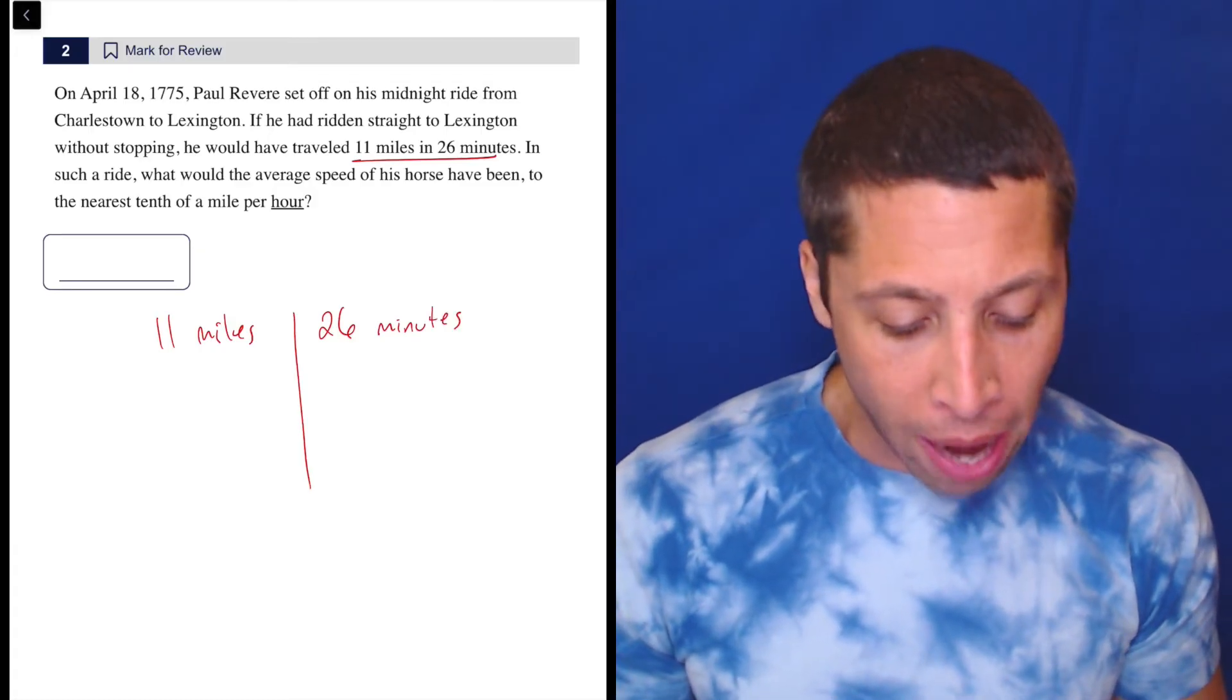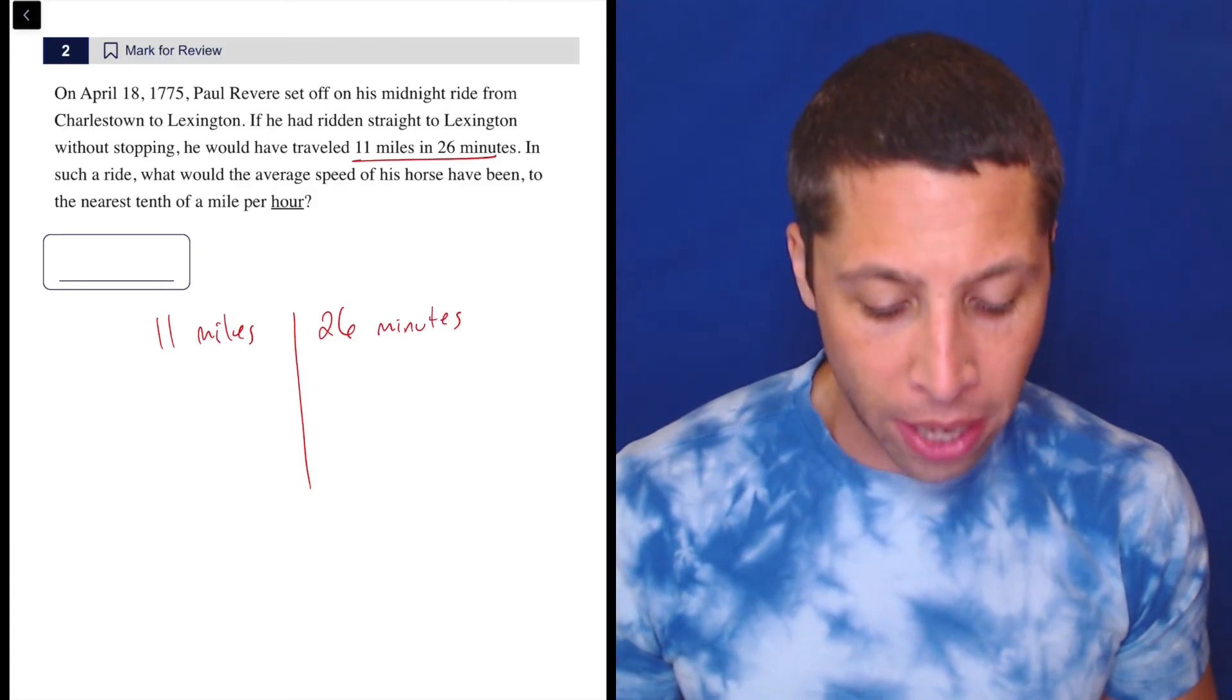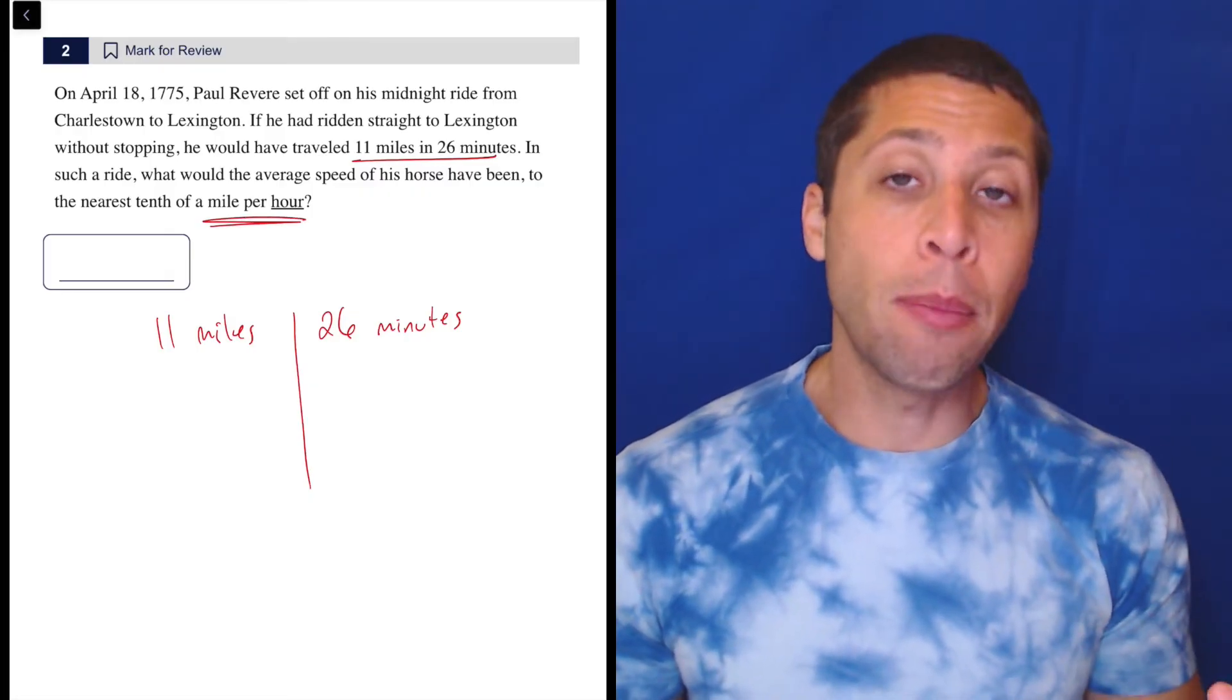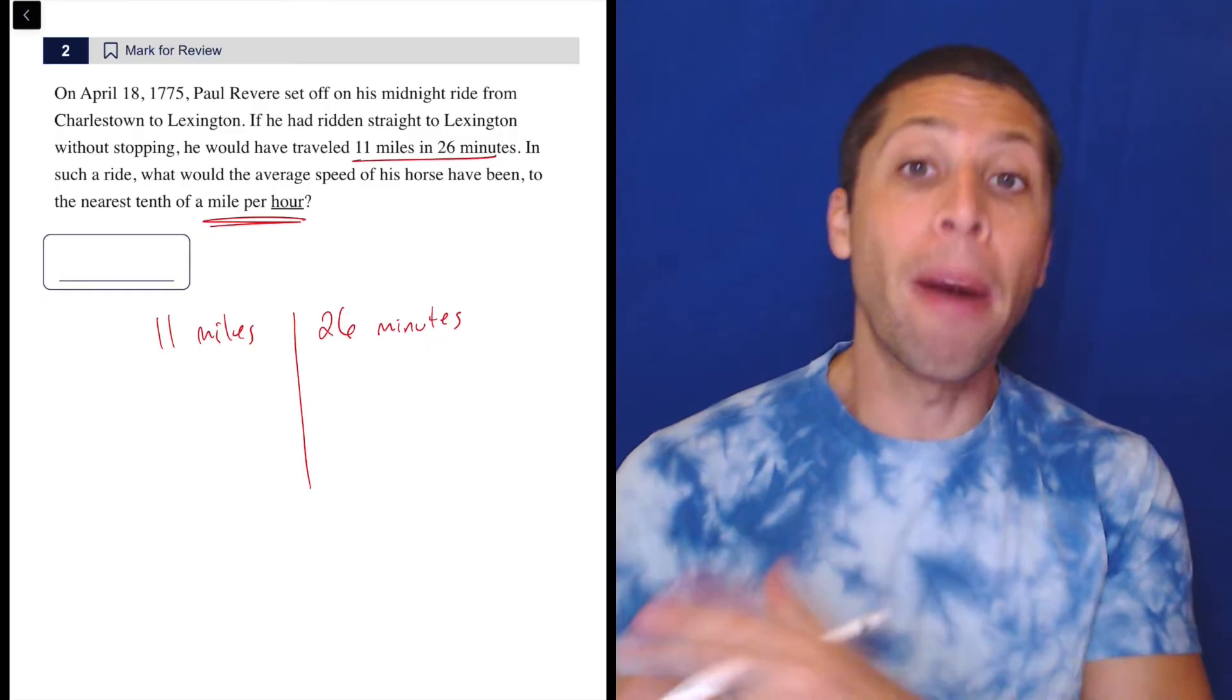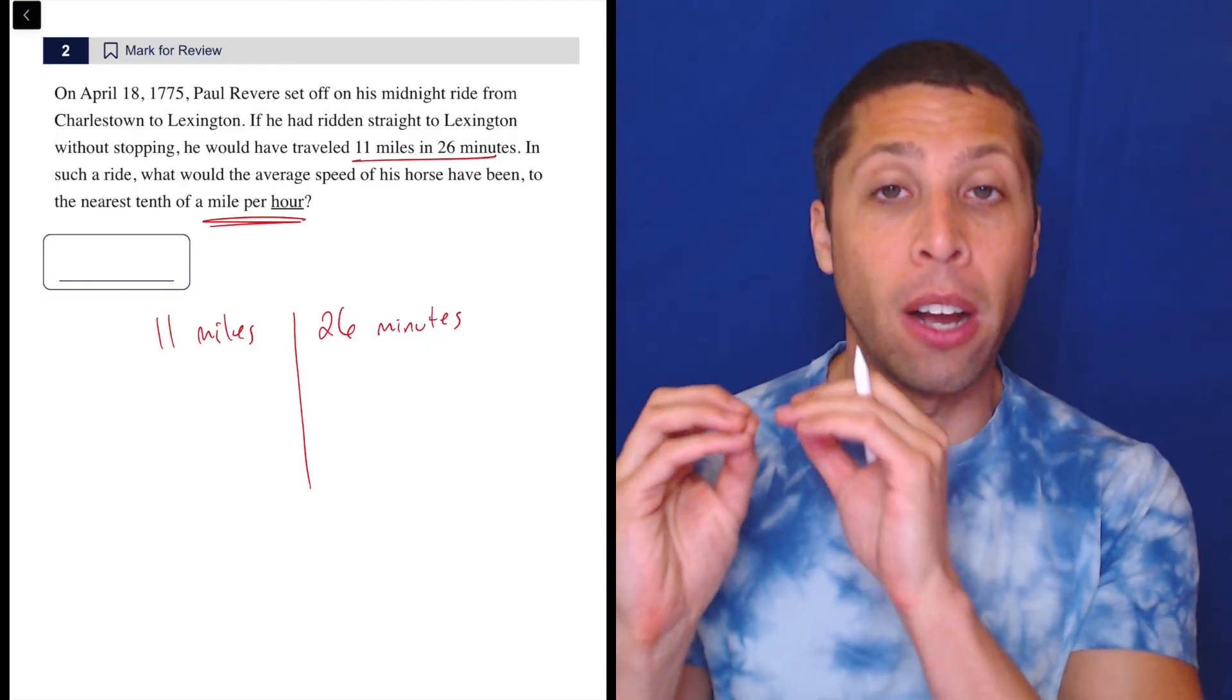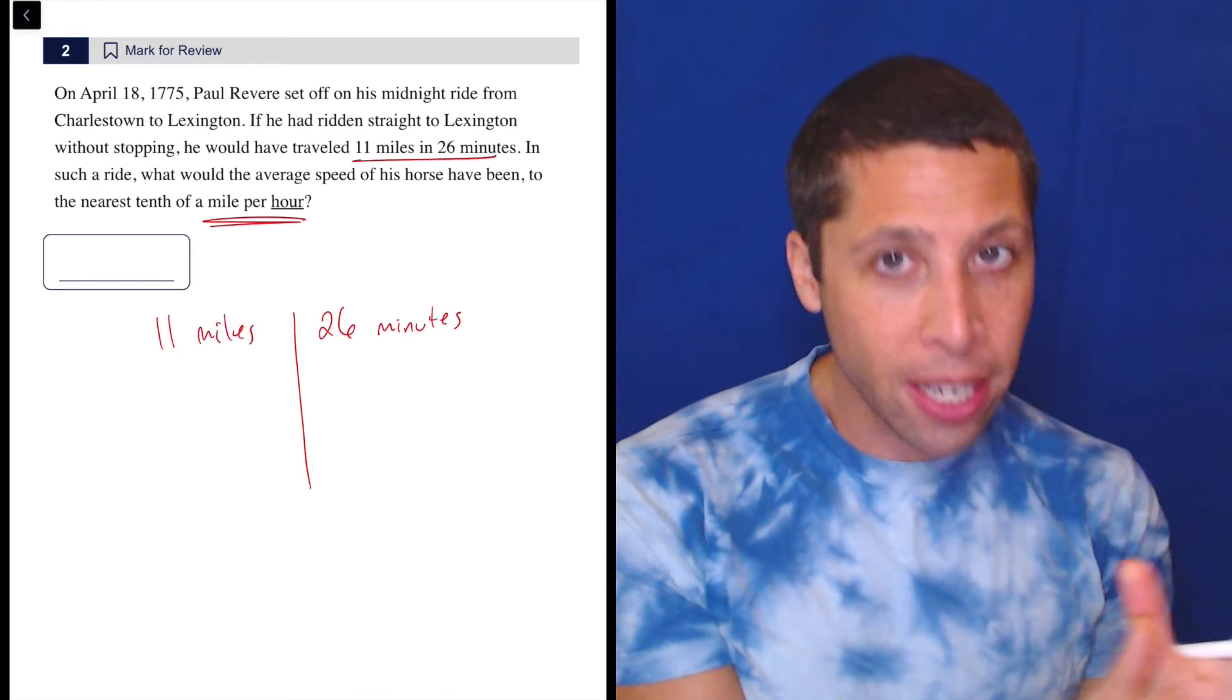In such a ride, what would the average speed of his horse have been to the nearest tenth of a mile per hour? That's also a rate, right? So the key is when we add this to the table, we have to put the miles on the other side because we want things to cross out. If there's a unit on the left and a unit on the right, they cross out.